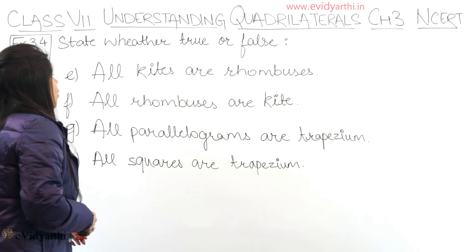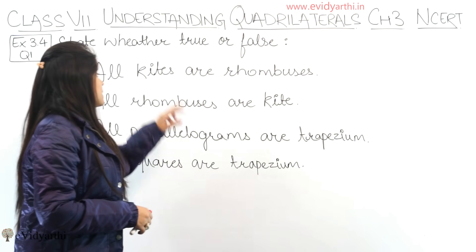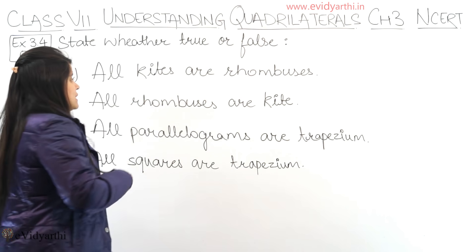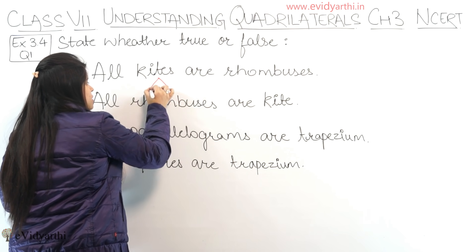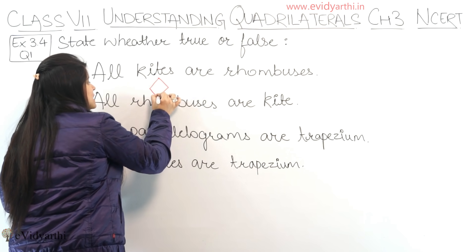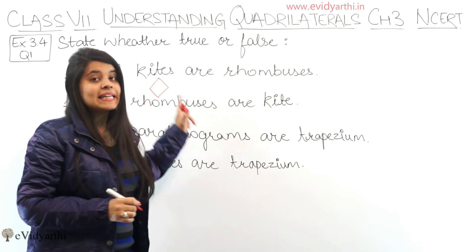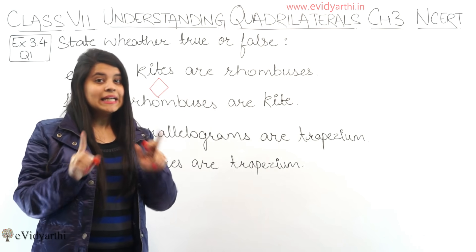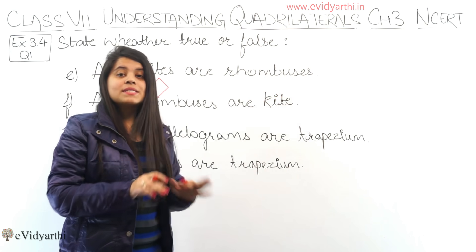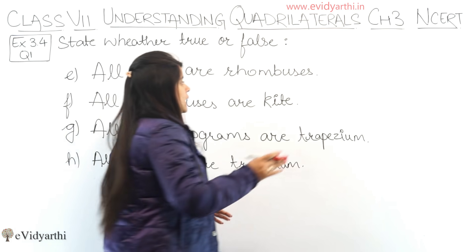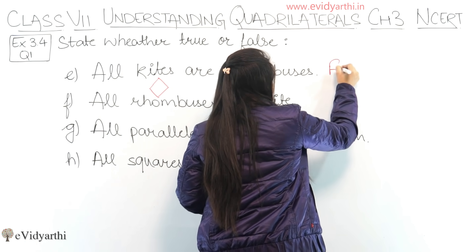Now coming to part E: all kites are rhombuses. This is false, because in a kite not all sides are equal, whereas in a rhombus all sides are equal. So this statement is false.